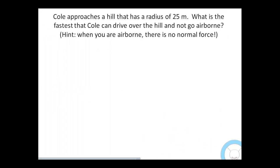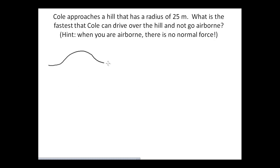In this last problem, we ask: just how fast can Cole go over a hill without going airborne? If you go too fast, you'll leave the road surface and become a projectile. The hint is that if you go airborne, you're no longer touching the seat below you. At that critical moment, the only force acting on Cole is his weight — the normal force equals zero.